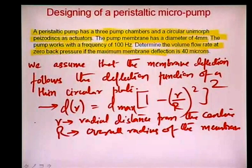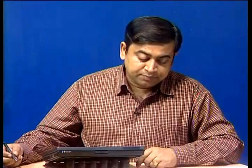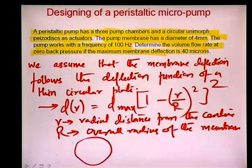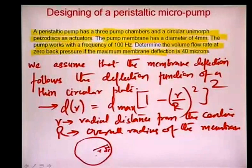Using this deflection function, we find the volume displacement at a certain radius r from the center of the circular unimorph membrane. We draw a circular chamber with radial distance r and consider a small element of width dr over which we evaluate the deflection.